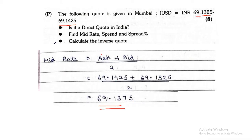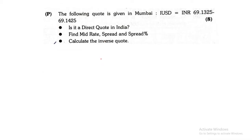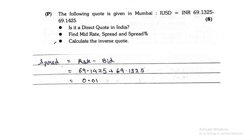For finding the spread, the formula was: spread equals ask minus bid rate. Ask rate is given, bid rate is also given. You just subtract and get the answer. This is a minus sign, not a plus sign. So you should get the answer as 0.01 — you can even add two more zeros after that.